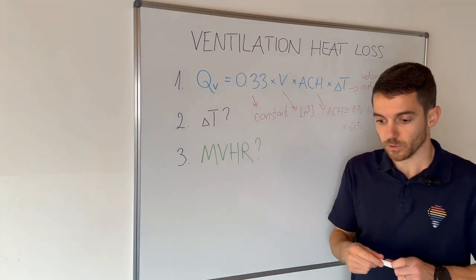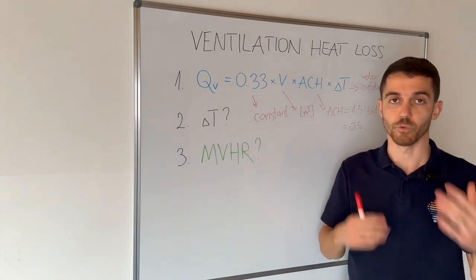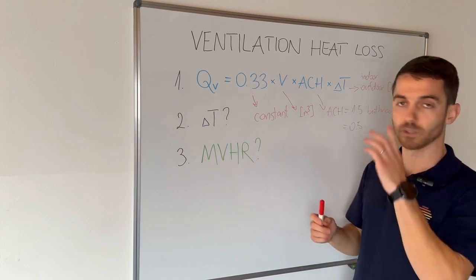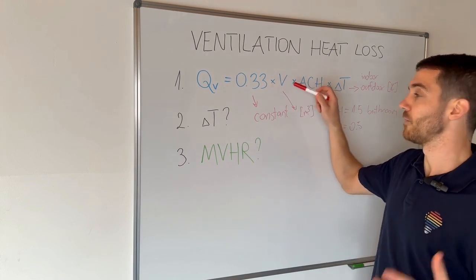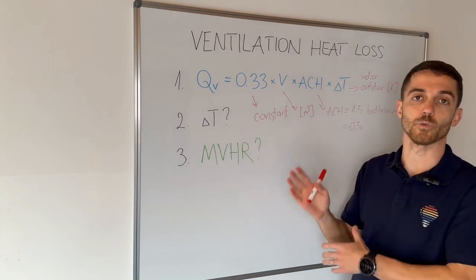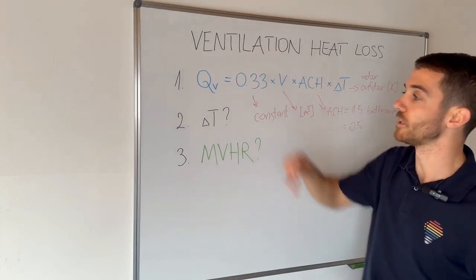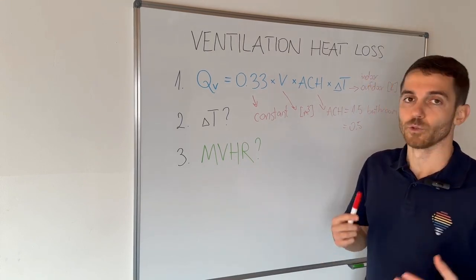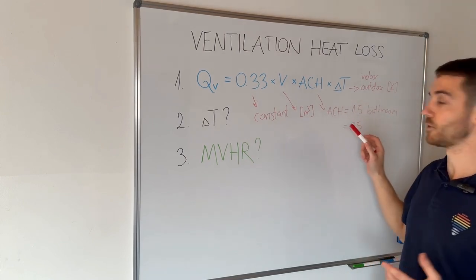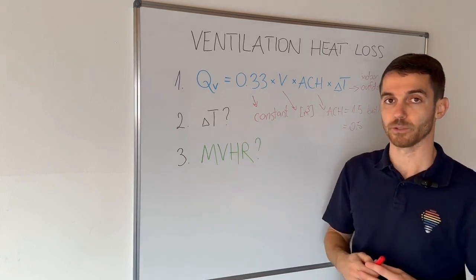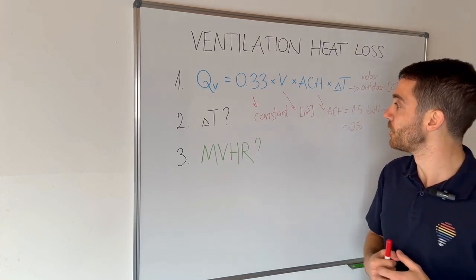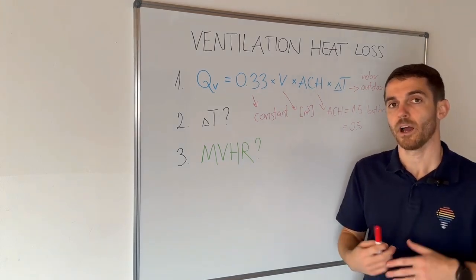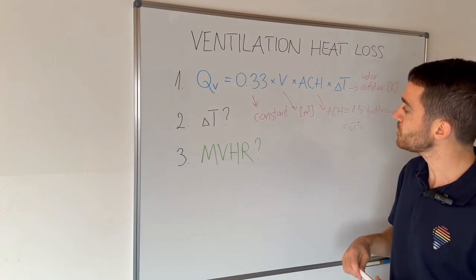The first important thing to understand is that when we are dealing with calculations and formulas, we are usually talking about static conditions. For example, in Croatia, the design outdoor temperature is minus 10 degrees. But when outdoor is minus 10, I assume no one will have 1.5 air changes per hour in the bathroom or 0.5 in another room. In my opinion, I think we are overestimating ventilation heat loss.